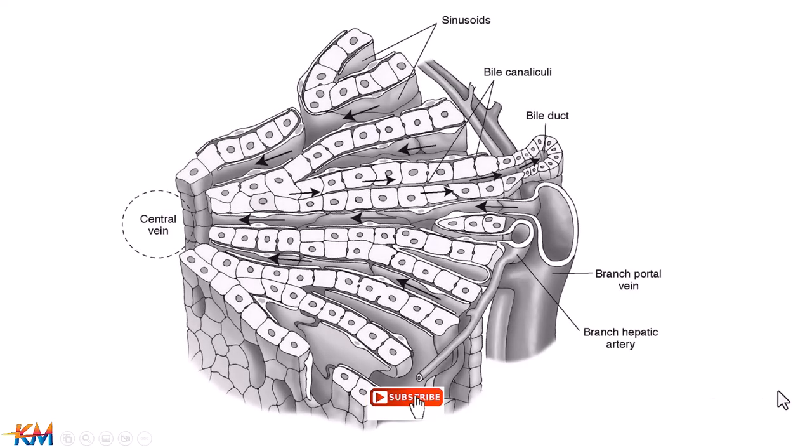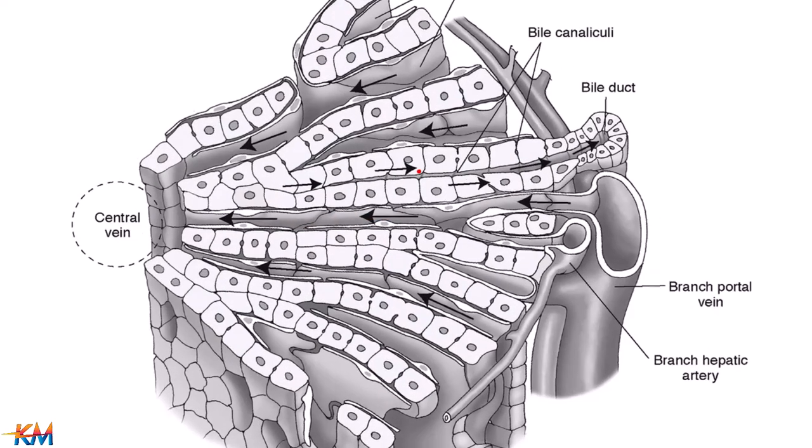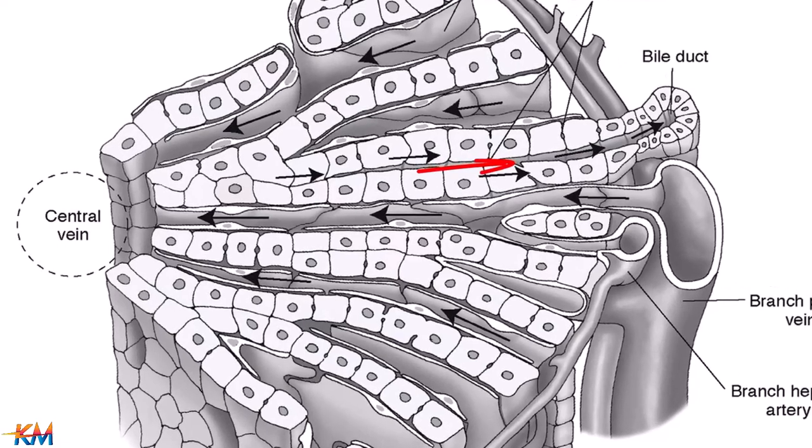Inside the liver, there are separate pathways for blood and bile. Blood circulates within sinusoids toward central vein, while bile is excreted from bile canaliculi to bile duct.